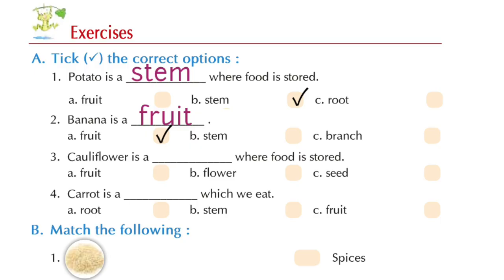Number 3, cauliflower is a blank where food is stored. Option A, fruit. Option B, flower. Option C, seed. Children, which is the correct option? Yes, option B, flower. The name itself indicates that it's a flower. Cauliflower is a flower where food is stored.